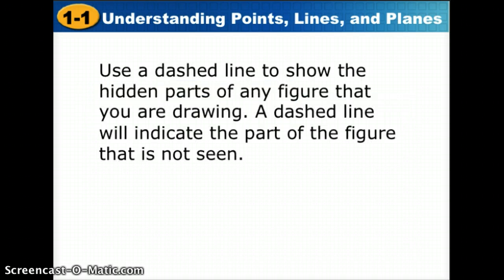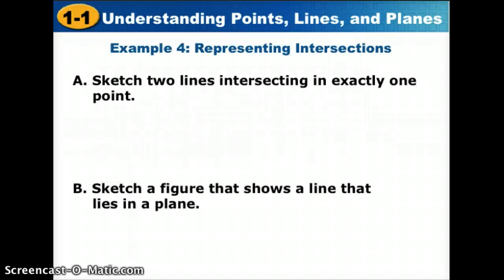When we're drawing our pictures, we can use a dashed line to show the hidden parts of any figure that we're drawing. A dashed line indicates that part of the figure is not seen. For example, if we want to sketch two lines intersecting in exactly one point, remember to show that we have lines, we want to use arrows, and to show that they intersected, we'll draw a dot in the middle to represent the one point.